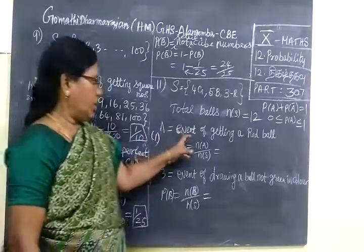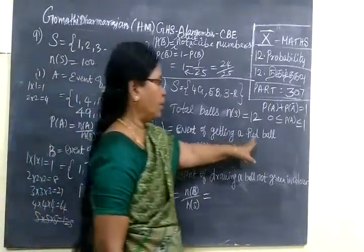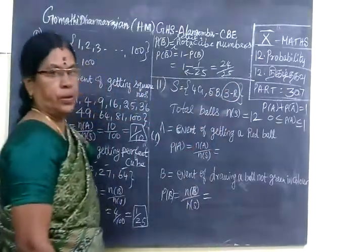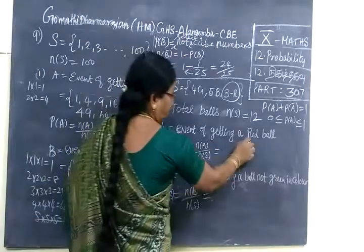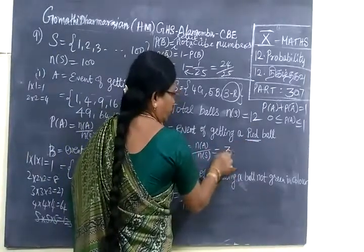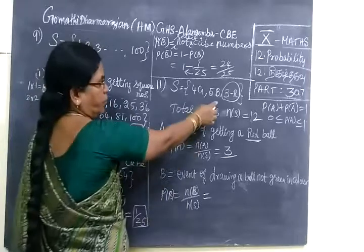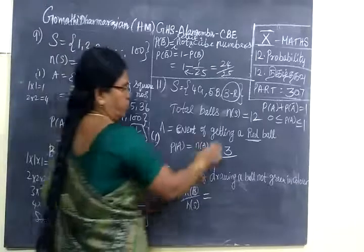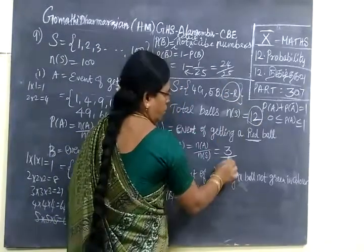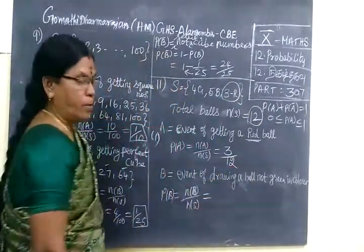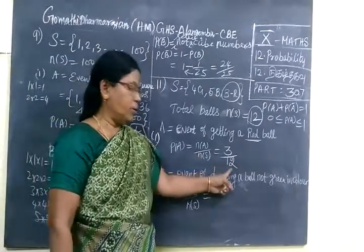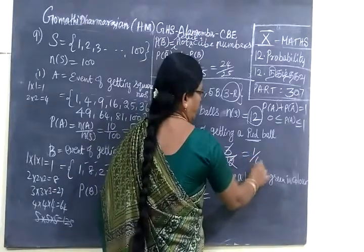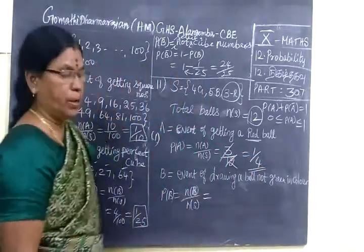We are going to select a red colored ball. So red colored balls totally we have 3. So probability of selecting red ball equal to number of red balls 3. Here it is given number of red balls equal to 3, then total number of balls 12. Here in the denominator you always write total equal to 12. So if you cancel you get 1 by 4.